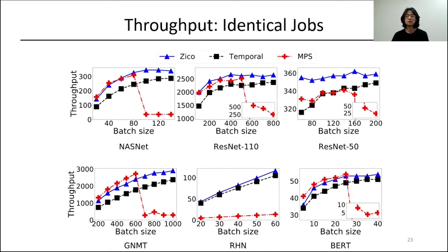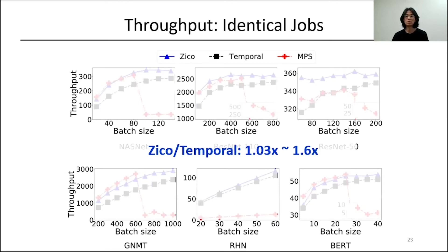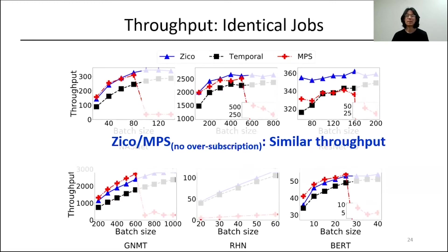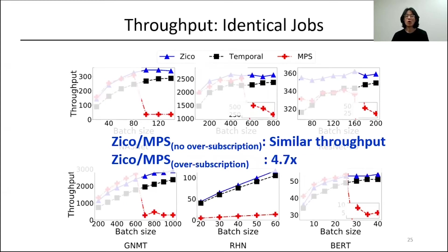Let me show the throughput comparison for identical model collocation. We measure throughput over different batch sizes on the x-axis. Compared to temporal sharing, ZICO achieves up to 1.6 times higher throughput and 1.2 times higher throughput on average. Compared to spatial sharing MPS, ZICO shows similar average throughput when MPS does not oversubscribe memory, and 4.7 times higher throughput on average when MPS oversubscribes memory.